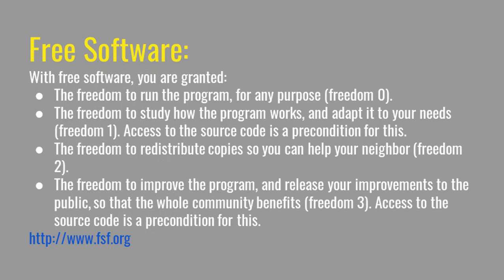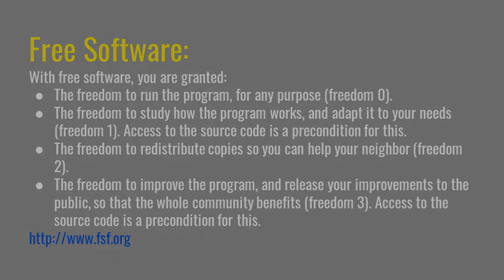Freedom two is the freedom to redistribute copies — you can give copies to other people, sell them, or do whatever you want with them. Freedom three is the freedom to improve the program and release your improvements to the public so the whole community benefits. When people make changes to the program they can release them to the public so that everyone gets those changes. These basic freedoms are outlined by the Free Software Foundation, and you can see more at their website.